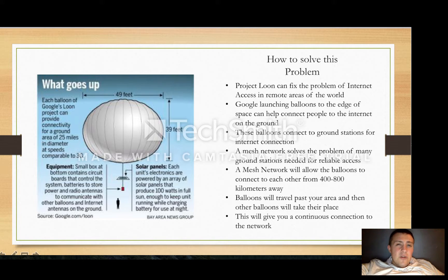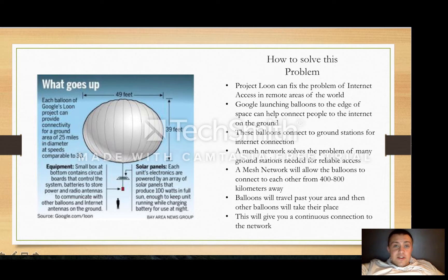So they came up with something called a mesh network. This mesh network is going to allow these balloons to connect to each other from 400 to 800 kilometers away from each other, so you don't have to build too many ground stations in order to have a reliable internet connection. Once one balloon travels past your area, another one will take its place, so there's always a constant connection. For example, in West Africa it only took about eight ground stations to power and give internet connection to all of West Africa, which saved them a lot of money compared to building say 20.